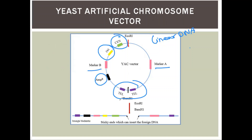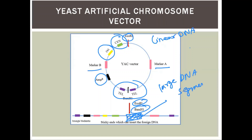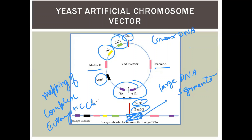The centromeric and telomeric regions are essential components. Restriction enzymes cut the vector to create sticky ends for inserting large DNA segments. YACs are used for mapping large chromosomes, especially for mapping complex eukaryotic chromosomes.